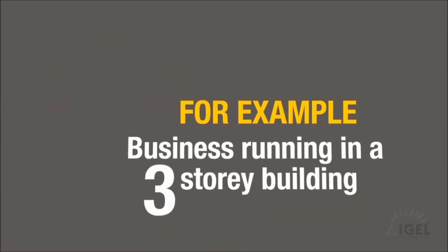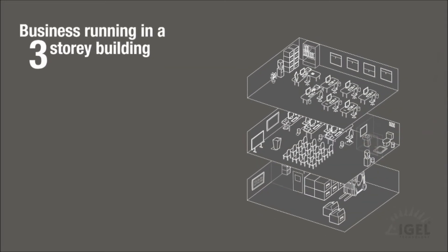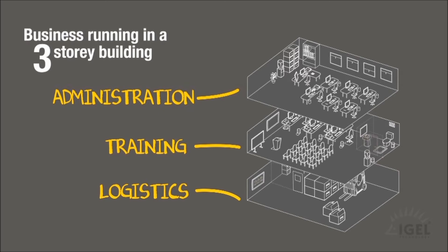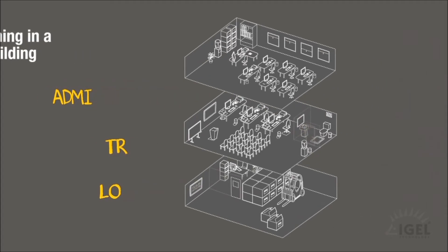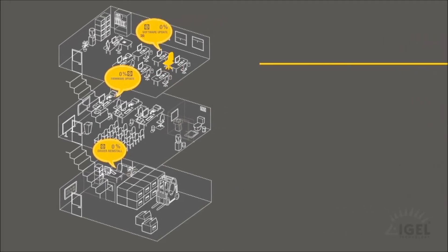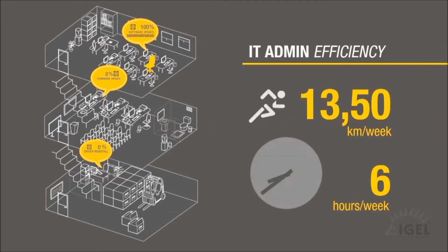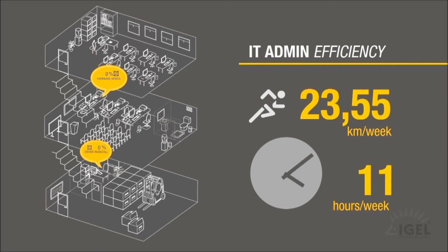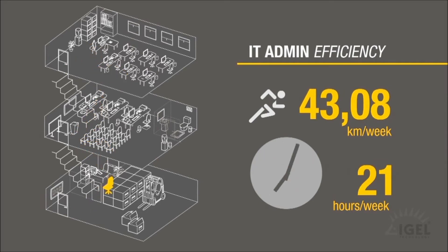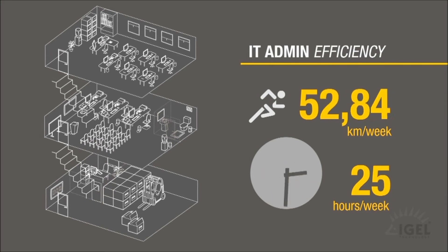Let's take this example for instance. Here is an establishment running in a three-storey building. There is IT used on all three floors. Let's say the IT administrator has to go to install software on the first floor, update firmware on the second floor, and update the driver of a scanner in the logistics department.